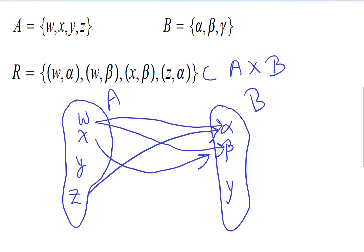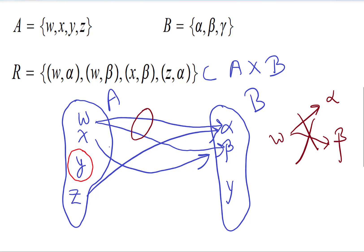Notice what has happened in this relation. First of all, this element here is left out. So when we take functions in this course, every element in the domain must have an assignment in B — Y has not been assigned to anybody on the right-hand side. Another issue is that W is landing at two different places, and we are not going to allow this — one element from the left cannot go to two different elements.